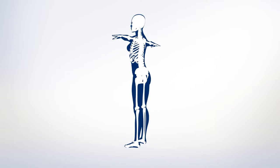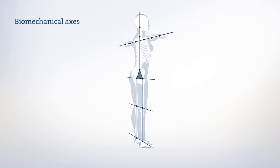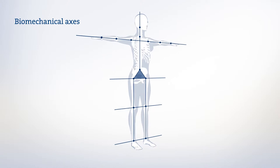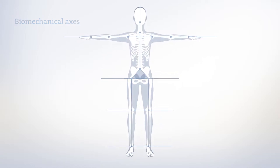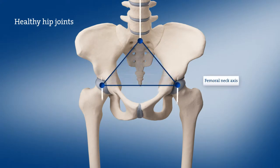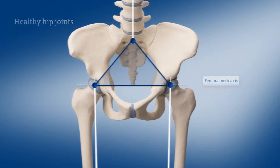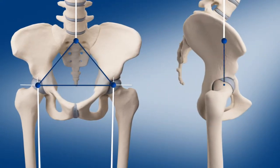Complex defects and anatomic anomalies in the hip joint are often associated with biomechanical deformities. Our aim in total hip arthroplasty is to achieve an optimum restoration of the biomechanical axis alignment to ensure the best possible post-operative mobility.